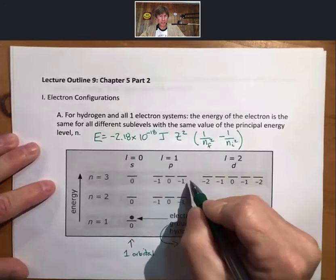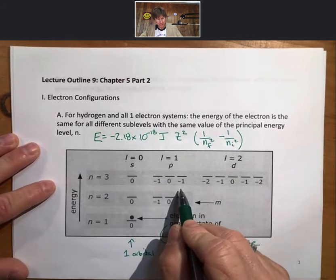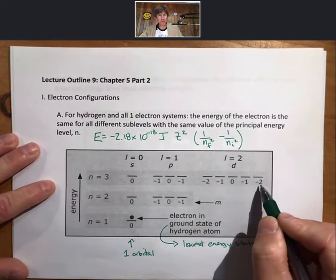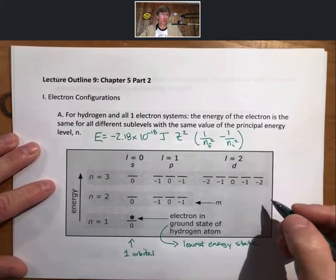For P, there are three orbitals, whether it's a 2p or a 3p. For D, there are five orbitals. For F, which we will see later, there are seven orbitals.